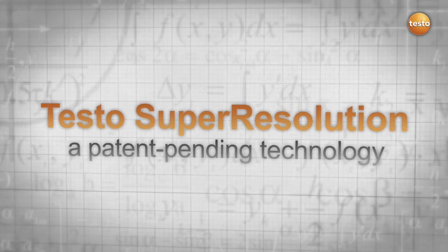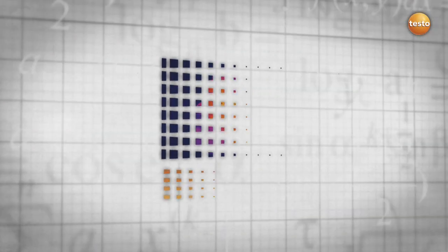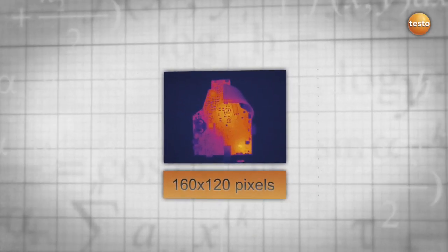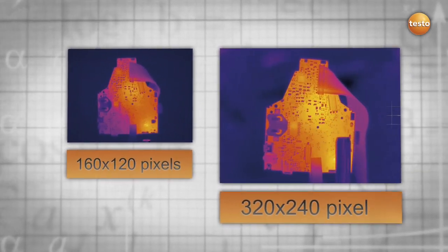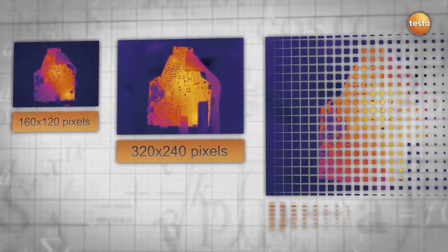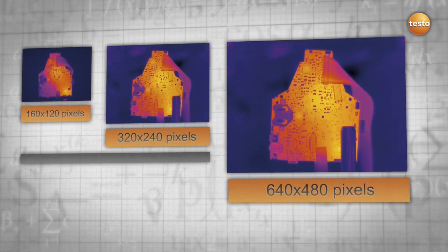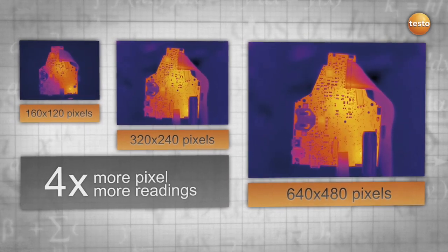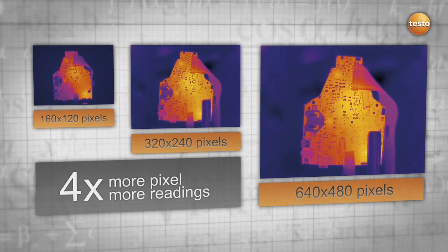The patent-pending Testo Super Resolution technology provides you with four times more readings, which results in a much more detailed thermal image. It makes the image quality of your Testo thermal imager a cut above the rest with four times as many pixels and a more detailed picture.